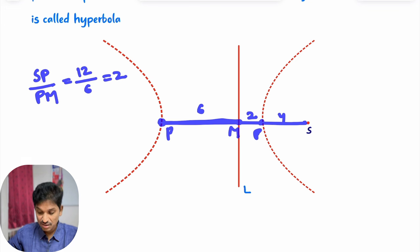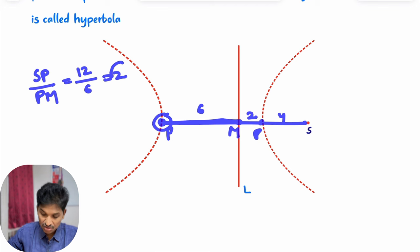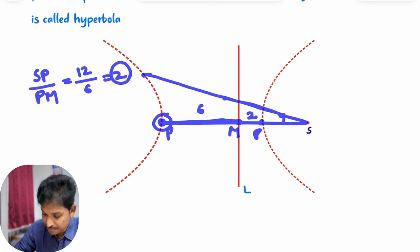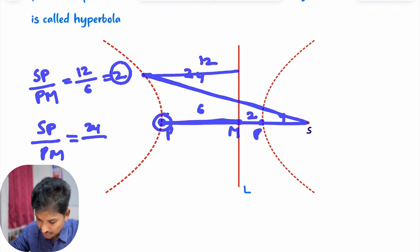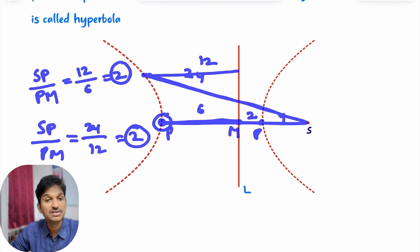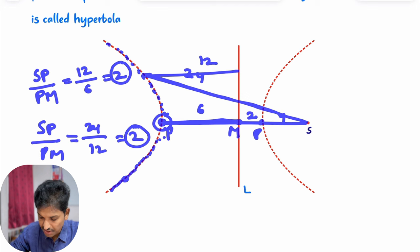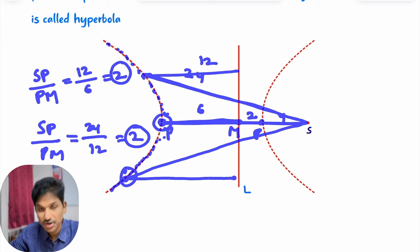So here we get another point P such that the distance from point P to the fixed point and fixed straight line is constant and that constant is greater than 1. Suppose you take one more point here — SP is 24 and PM is 12. 24 divided by 12 is 2. Another set of points is also obtained such that the ratio of distances from the fixed point and fixed straight line is constant and greater than 1.